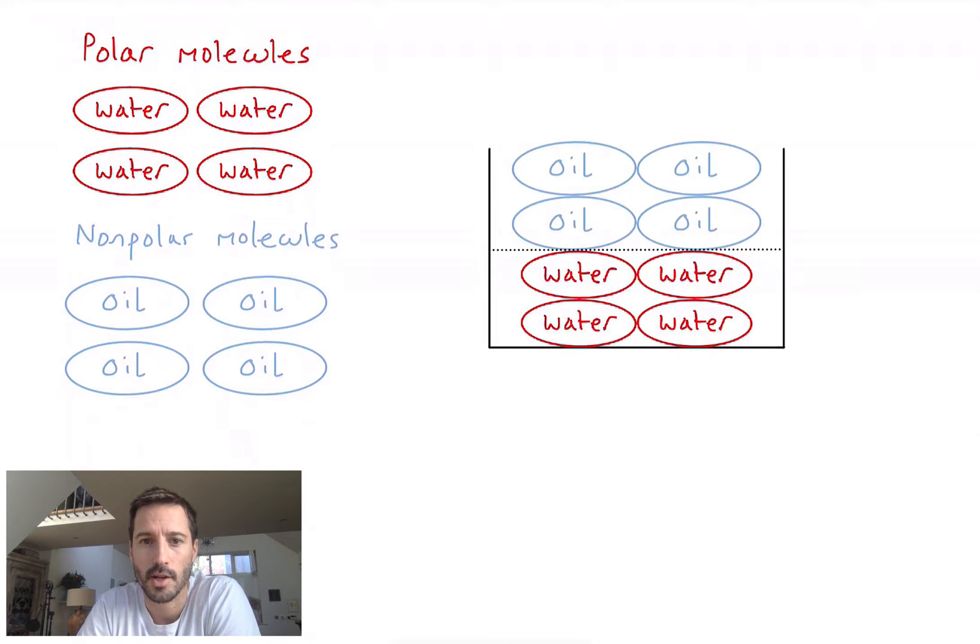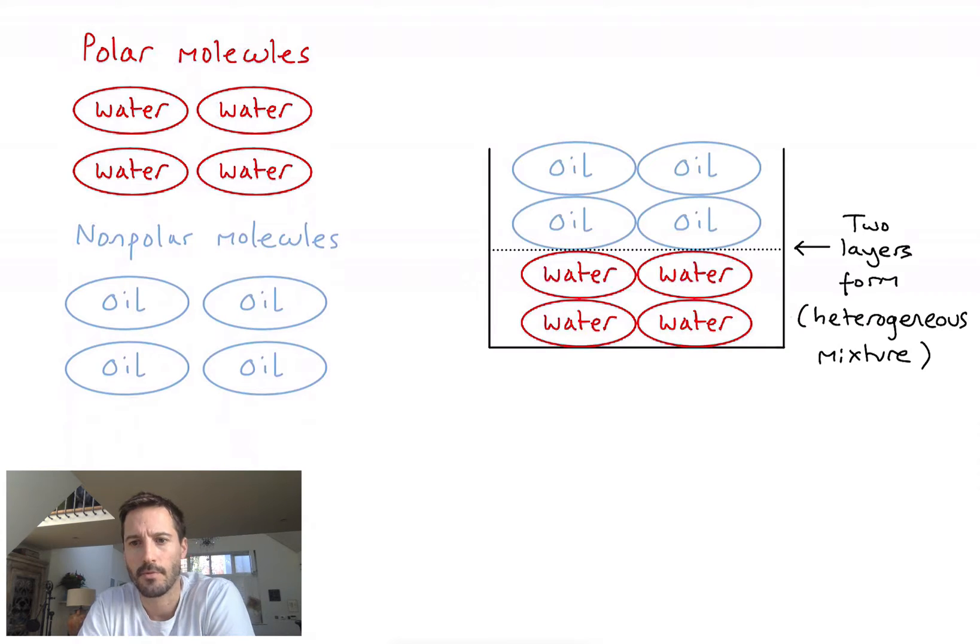What I would end up seeing is that I find two distinct layers in my mixture. The oil molecules have preferentially got close to other oil molecules and the same with my water molecules, so we end up with a mixture that has two separate layers. Oil is the top layer in this example because it's less dense than water.